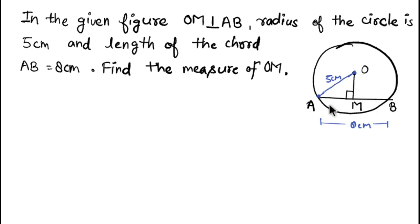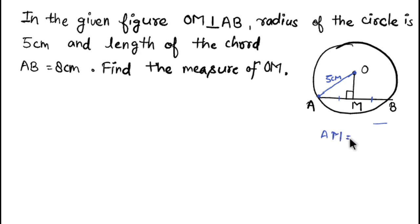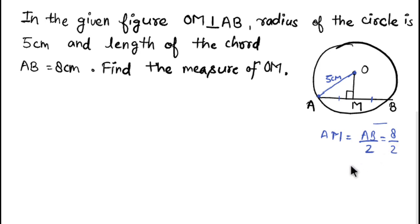Now let's apply this property to find OM. The length of chord AB is 8 centimeters. Since OM is perpendicular to AB, it bisects AB. So AM equals AB divided by 2, which is 8 divided by 2, giving us AM equals 4 centimeters.